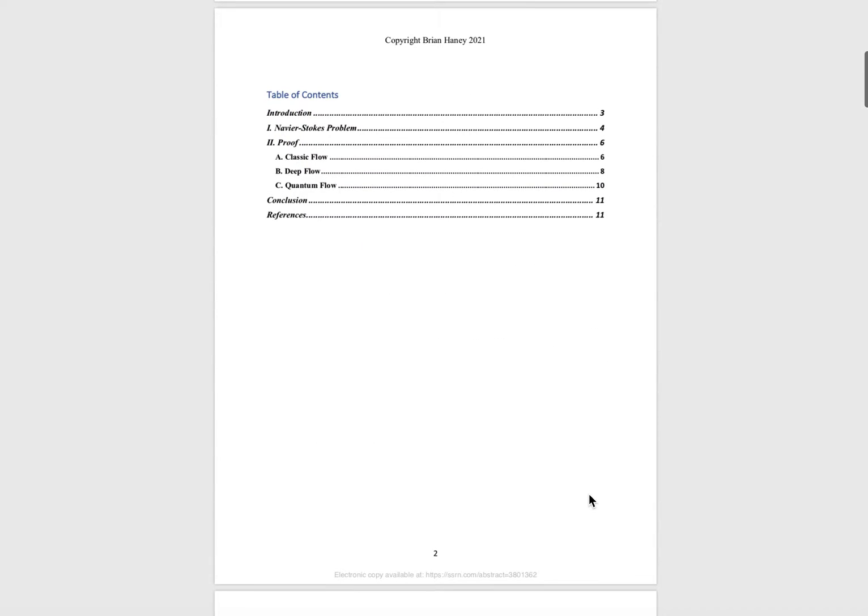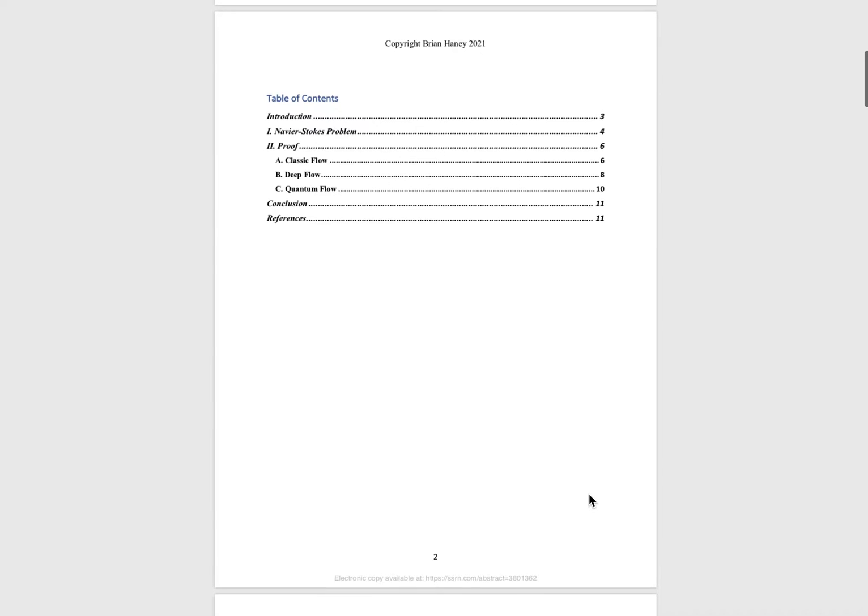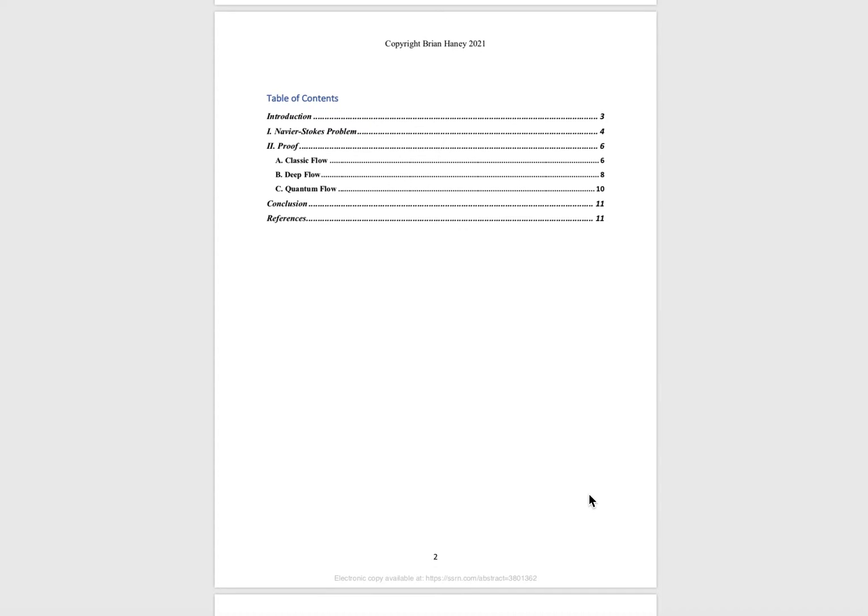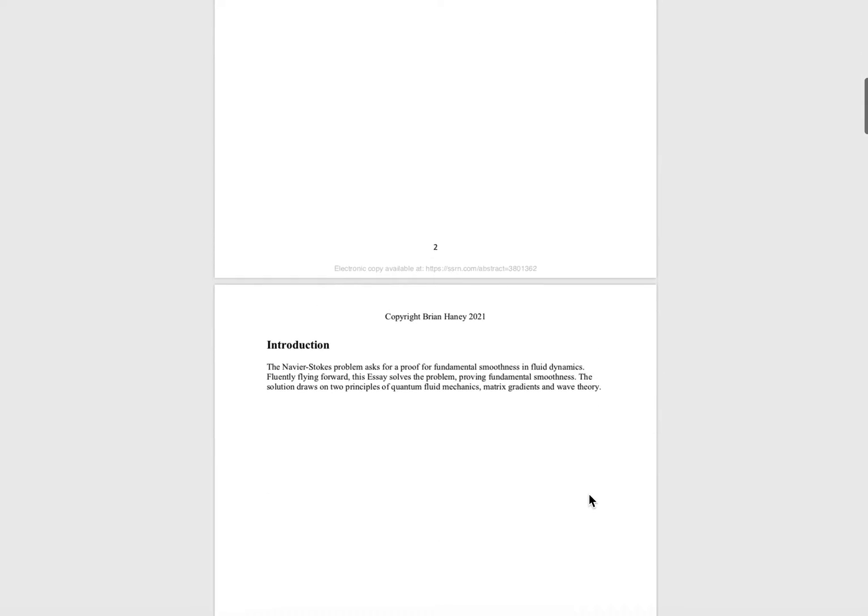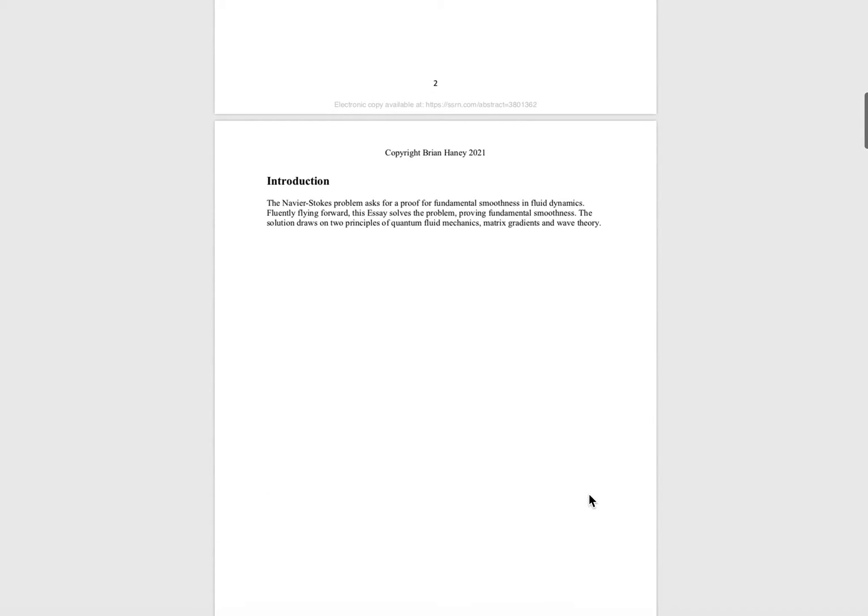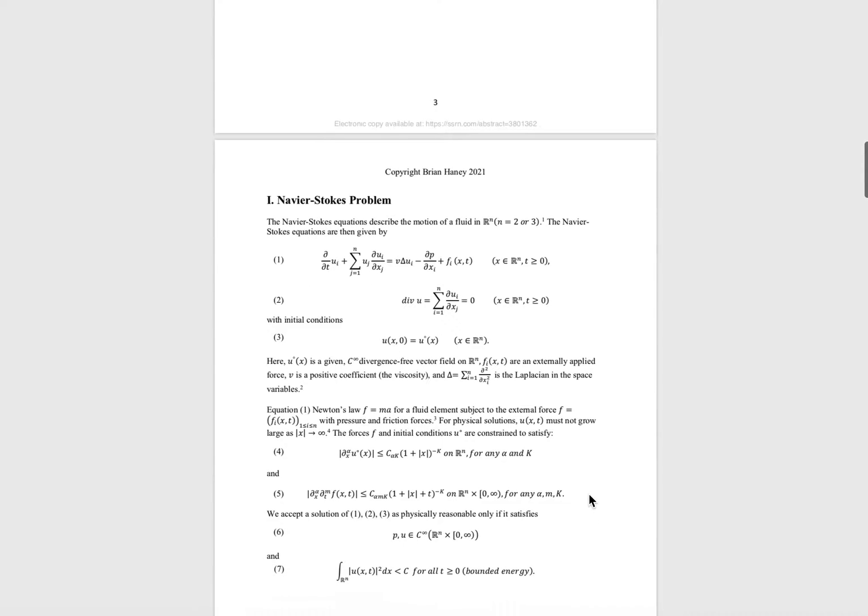I'll post a link to the paper in the description as well as a link to the problem and the Wikipedia page. Essentially, Navier-Stokes is trying to set out to prove that fluid fundamentally flows smoothly. Quick introduction and then the problem statement.